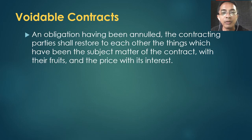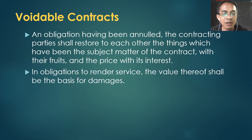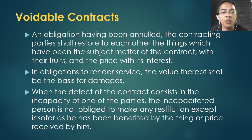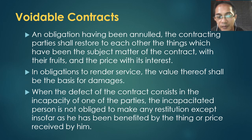When a voidable contract is annulled, the parties must restore what they received — return the property and the payment, exchange back. For obligations to render service that can no longer be returned, the value shall be the basis for damages. When the defect consists in the incapacity of a party, the incapacitated person is not obliged to make restitution except when they benefited from it — then they must return the amount of the benefit received.